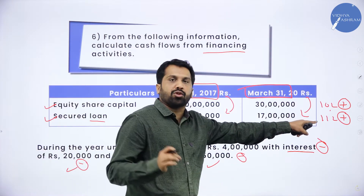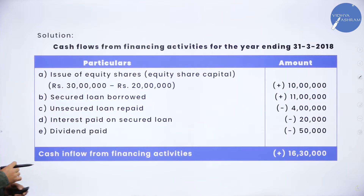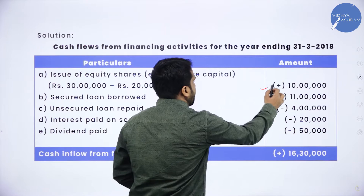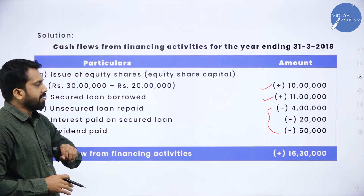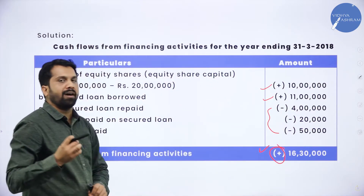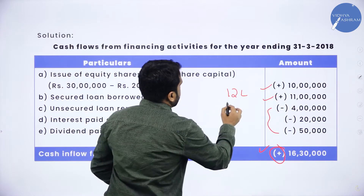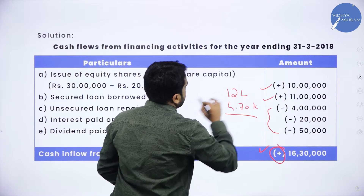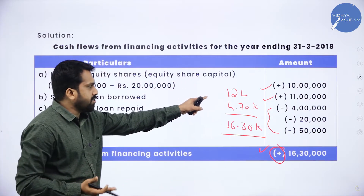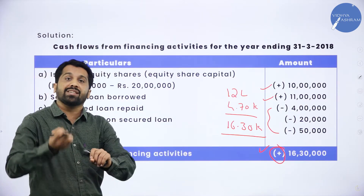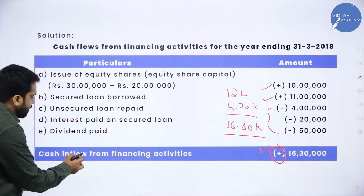Now, 10 lakh and 11 lakh should be added. Your 4 lakh, 20,000, and 50,000 should be subtracted. 10 plus 11 gives 21 lakh. Adding the three outflows: 4 lakh 70,000. Subtracting gives 16 lakh 30,000. This is your answer. Your positive value is more than the negative value, so the final answer is cash inflow — not outflow — of 16 lakh 30,000.